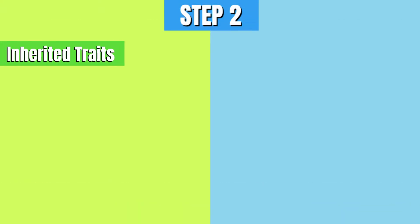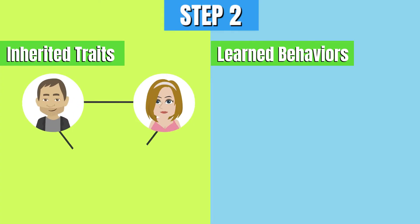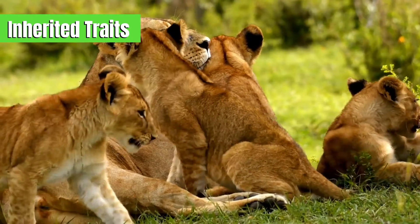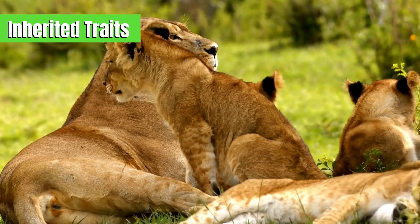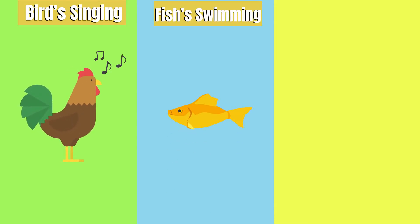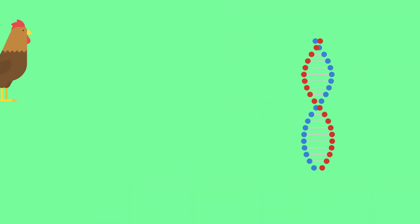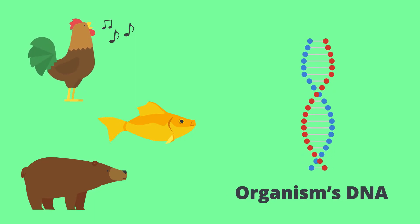Step 2: Inherited traits versus learned behaviors. Organisms have traits that are passed down from their parents, known as inherited traits, and behaviors that are learned from experience or from others. Inherited traits are the characteristics that an organism is born with. For example, a bird's ability to sing a particular song, a fish's streamlined body for swimming, or a bear's thick fur for insulation are all inherited traits.